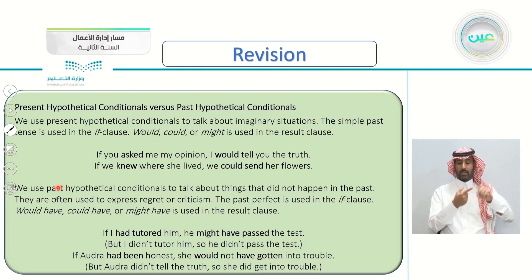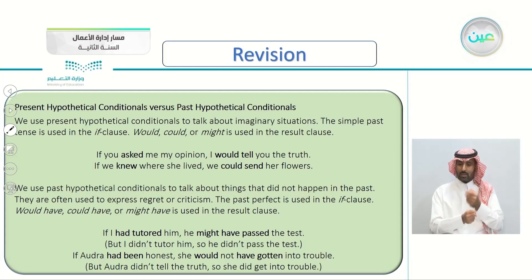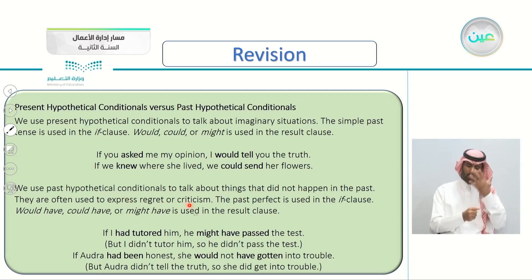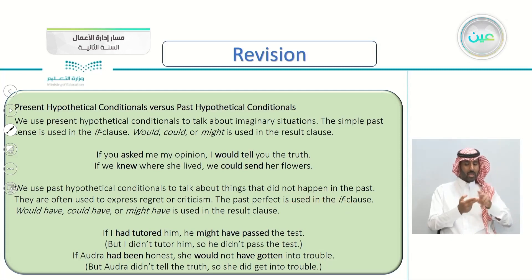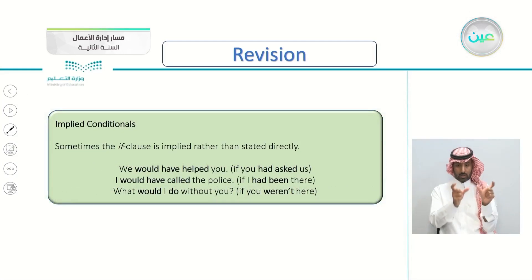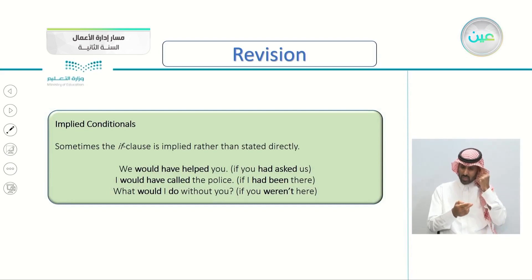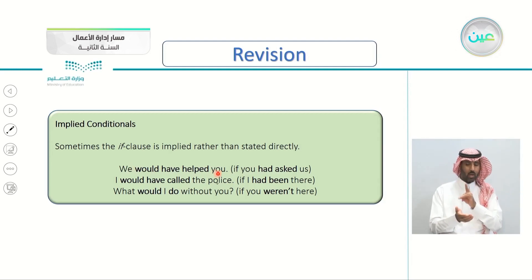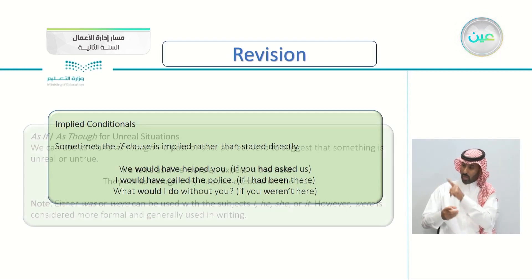On the other hand, in the past hypothetical conditionals, we use it to talk about things that did not happen in the past — things that did not happen. We use it often to express regret and criticism. We use the past perfect in the if clause, and in the result clause we use would have, could have, or might have. And we also learned about implied conditionals — it is implied rather than stated directly, as in 'We would have helped you if you had asked us.'